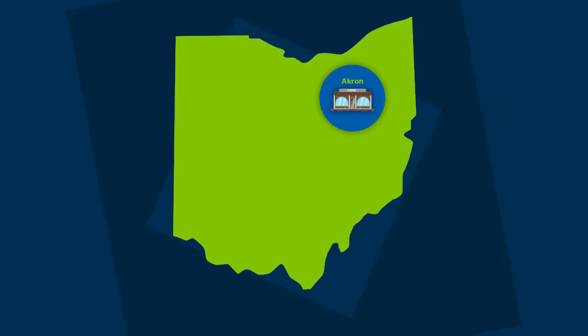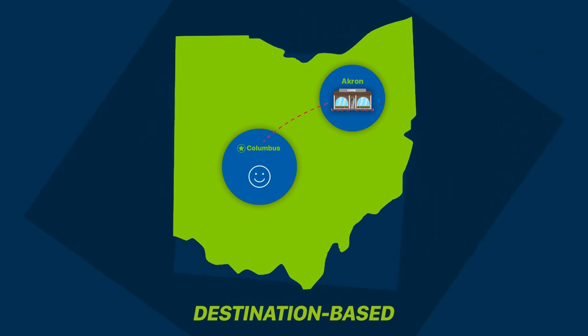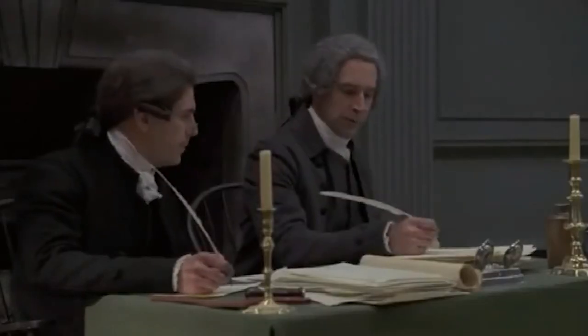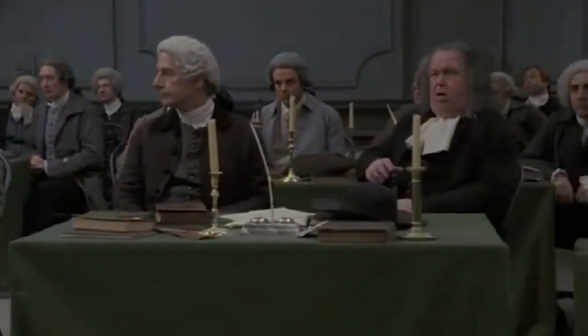Now let's change it up. Let's say your coffee shop is set up in Akron, Ohio. Ohio is a destination based state. So if you ship coffee beans to a customer in Columbus, Ohio, you will collect sales tax at the rate in Columbus, not Akron. It's important to understand these rules were created long before there was such a thing as online selling — Amazon sales tax wasn't a thing because Amazon FBA wasn't a thing.